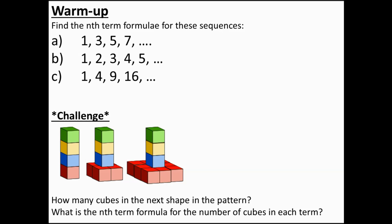Okay, let's have a look. The first sequence, part A, is a linear sequence — that's the nth term. Part B is also linear; the nth term formula is that. Part C is just the sequence of square numbers, so it's non-linear, but the nth term formula should be familiar to you — it's just n squared.